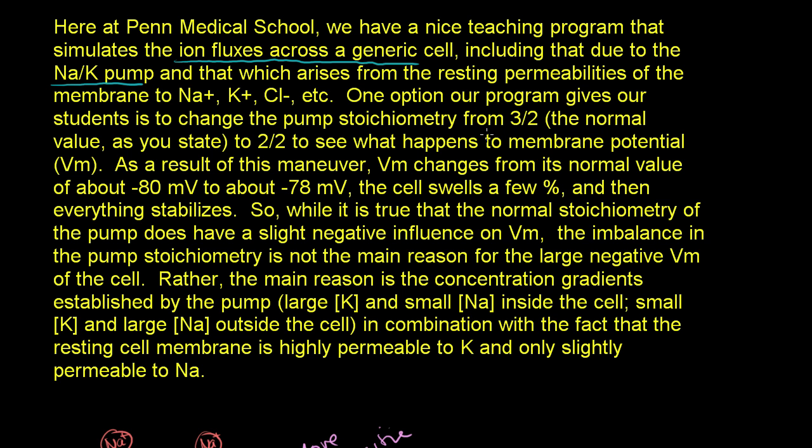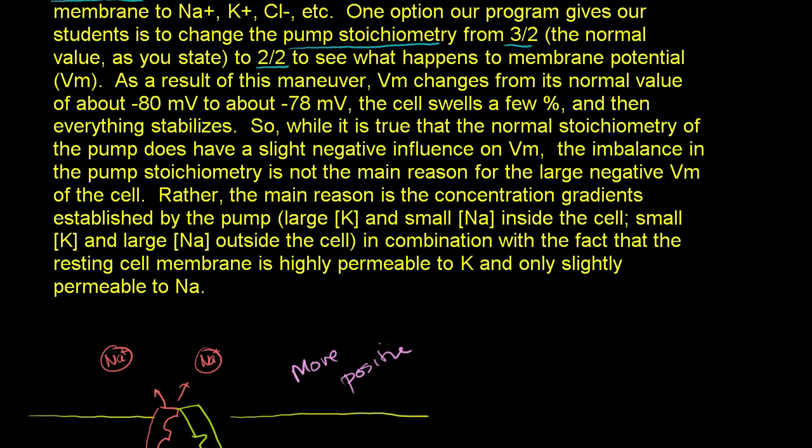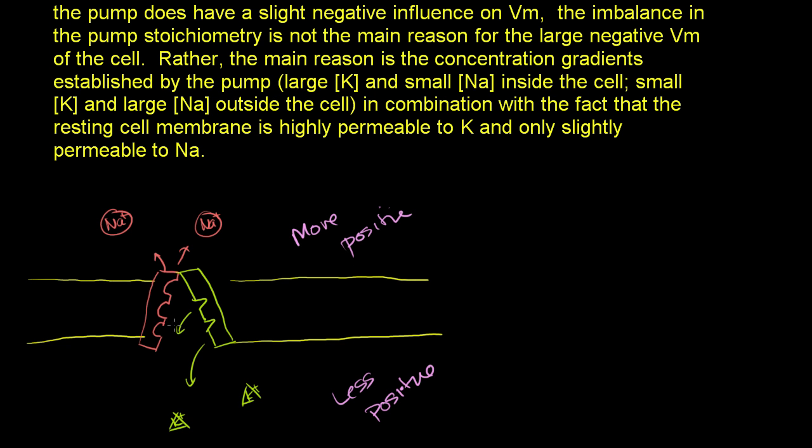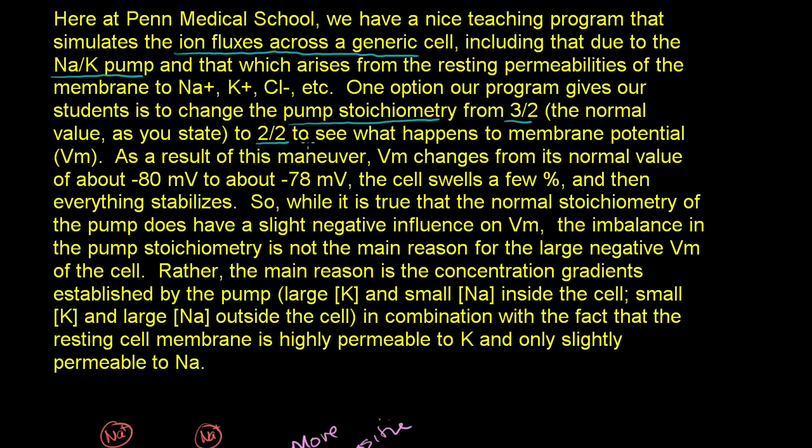One option our program gives students is to change the pump stoichiometry from 3 to 2. So when he's talking about pump stoichiometry from 3 to 2, he's just talking about they're changing the ratio. So they change it from 3 to 2 to 2 to 2. So what that means is they have a simulation program that says, what if the sodium potassium pump, instead of pumping 3 sodiums out for every 2 potassiums it pumps in, what if it was even? What if it was 2 sodiums and 2 potassiums? And based on my explanation of why we have this potential difference, that should not lead to a potential difference if the main reason was the stoichiometry.